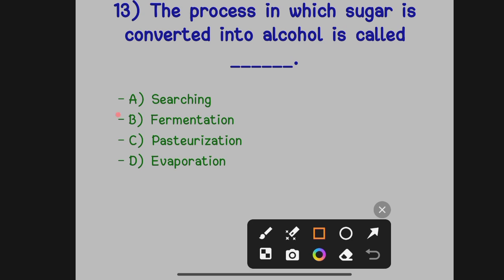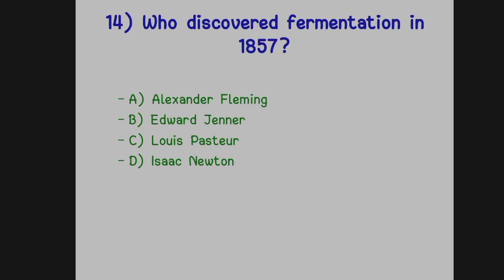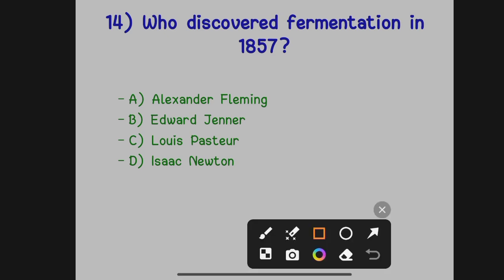Who discovered fermentation in 1857? Option A: Alexander Fleming. Option B: Edward Jenner. Option C: Louis Pasteur. Option D: Isaac Newton. The correct answer is Option C, Louis Pasteur — he discovered fermentation in 1857.